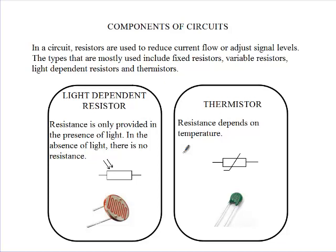This light-dependent resistor only provides resistance in the presence of light. In the absence of light, there is no resistance. So these devices are usually found in lamps that go off during the day and light up at night — usually the street lights that use solar energy have these devices in them.